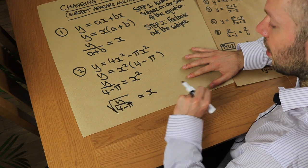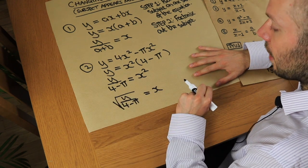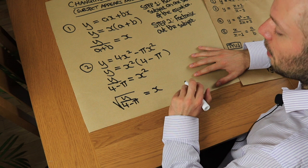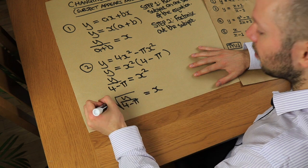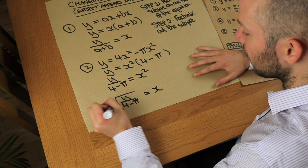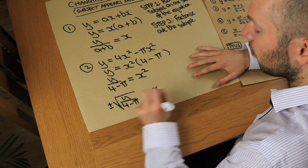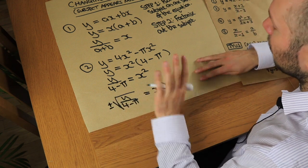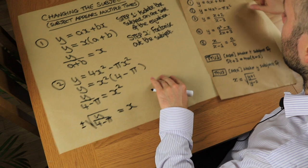Then to undo the squared we square root both sides, giving the square root of y over (4 minus π) equals x. Make sure that square root is over the whole fraction. From the previous video we should technically put plus or minus on the front, but we won't go into that again.